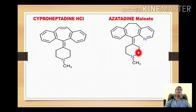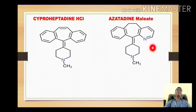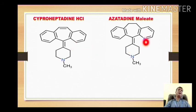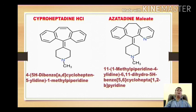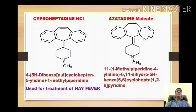One more important difference: in azatadine, one of the benzene rings is substituted with a six-membered pyridine ring. In the name 'azatadine,' 'aza' stands for the nitrogen — one of the carbons is replaced by nitrogen, giving formation of azatadine. These are the IUPAC names of these compounds. These compounds are used for treatment of hay fever. Due to some serious side effects associated with azatadine, it has been withdrawn from the market.